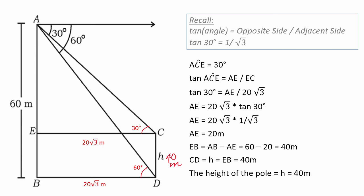Using trigonometry, we were able to find the height of the pole. Remember two things: tan of an angle equals opposite side over adjacent side; tan 30 is 1 over root 3, and tan 60 degrees is root 3.